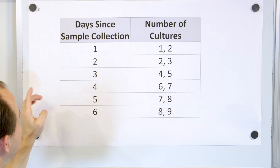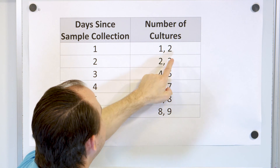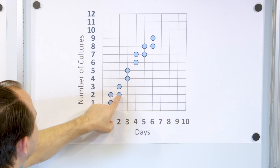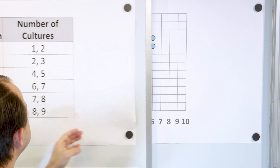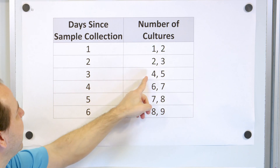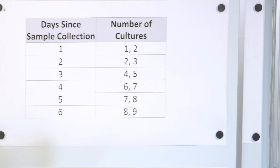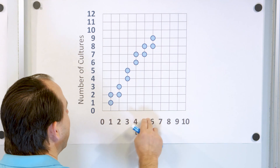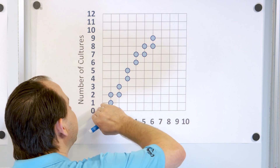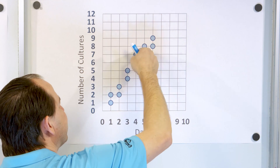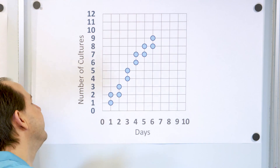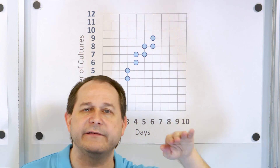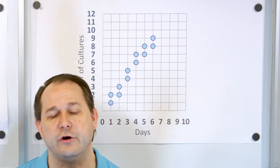After two days, we have two cultures and then three cultures. After three days, we have four cultures and five cultures in the two different petri dishes. As the number of days go up, you can clearly see that the number of cultures recorded in both trials generally follows an uptrend. So we can see it's a positive correlation — as the number of days increases, the number of cultures also increases.